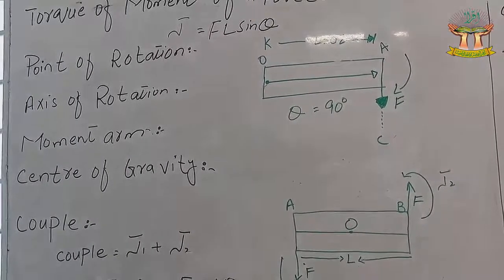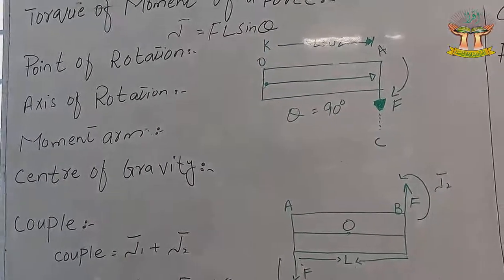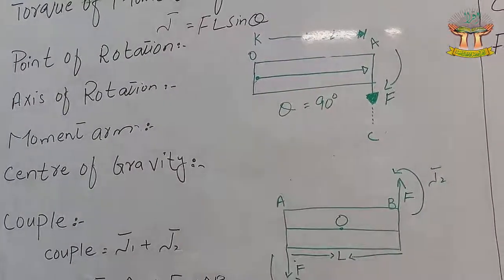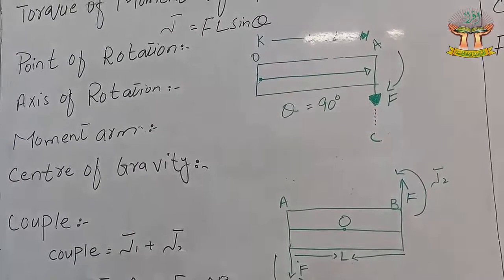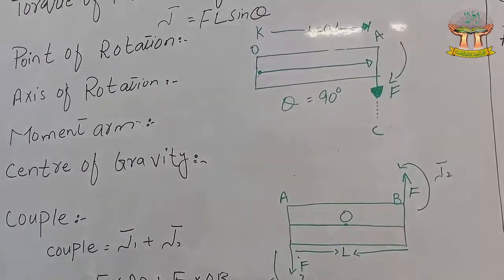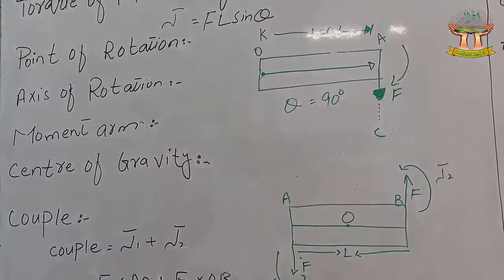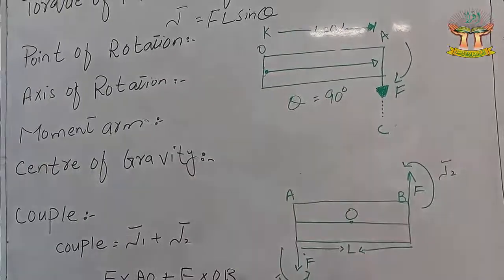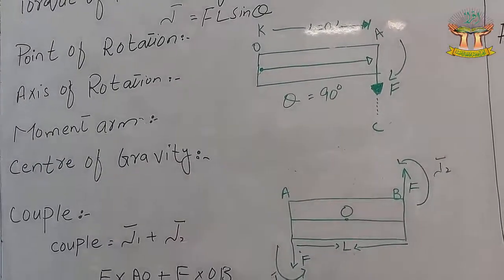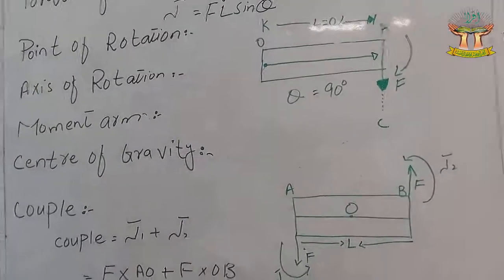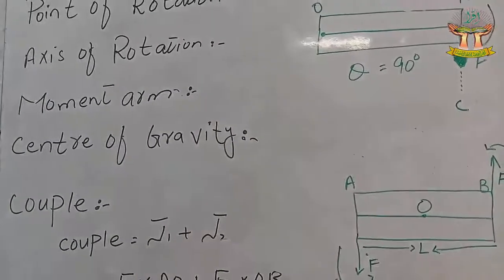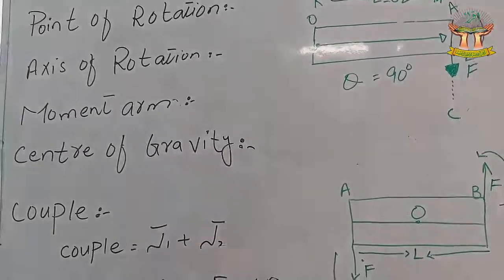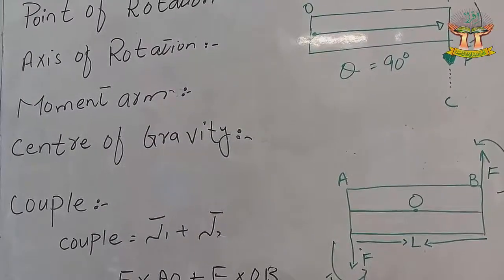The point about which a body can rotate is called the point of rotation. Our next topic is axis of rotation. It is the line around which a rigid body rotates. The perpendicular line passing through point O is the axis of rotation.